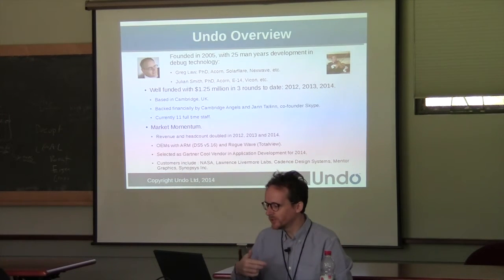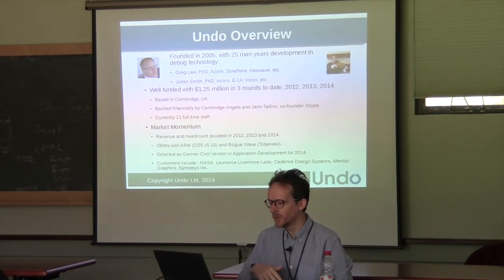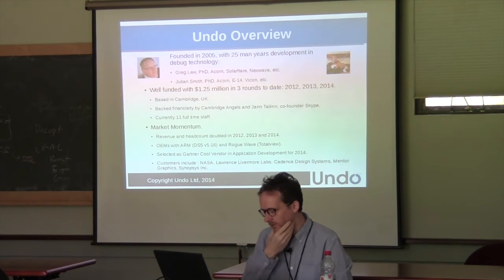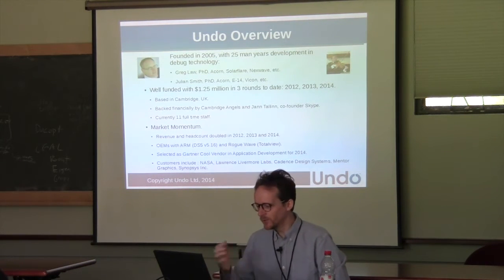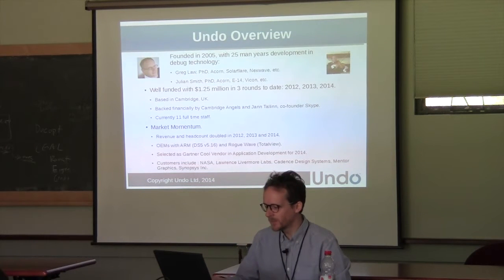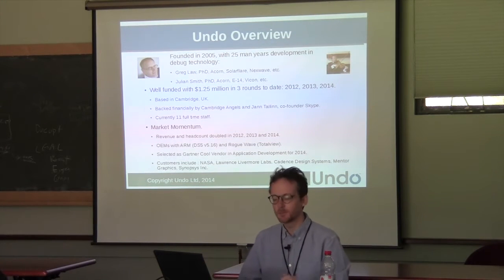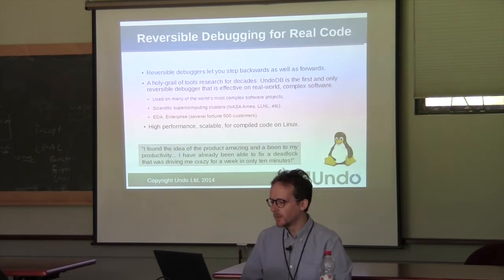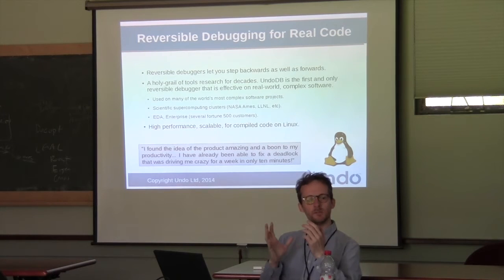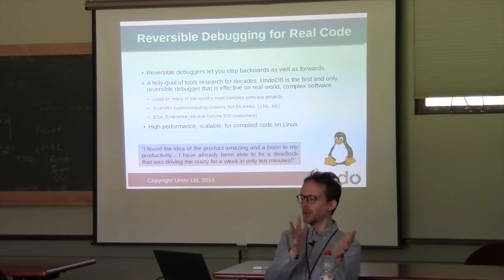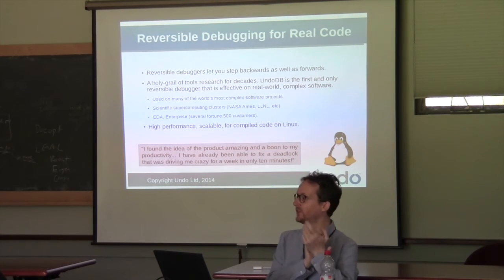We're a company called Undo, founded about 10 years ago by myself and Greg Law, with various rounds of funding and customers. Reversible debugging means you can debug a program and go a step backwards as well as forwards, which is really useful for finding bugs in software.